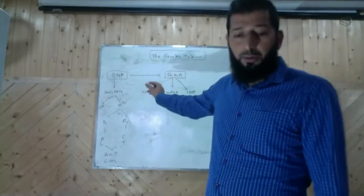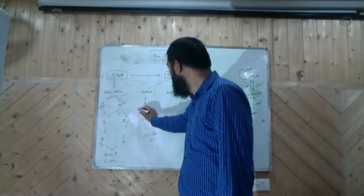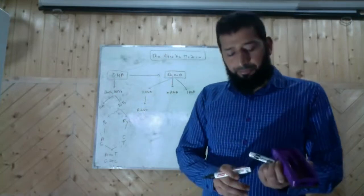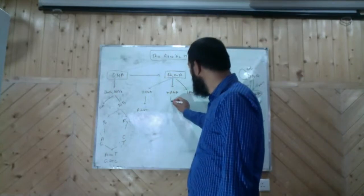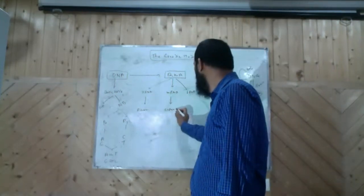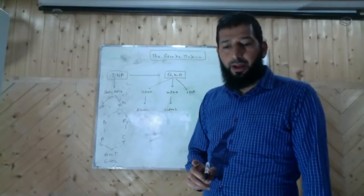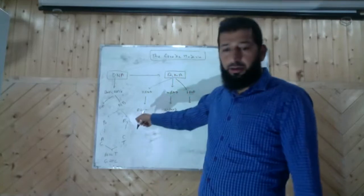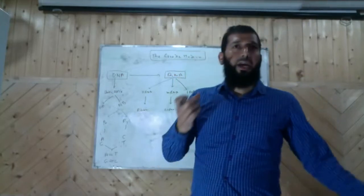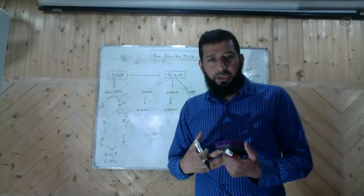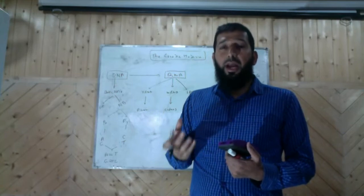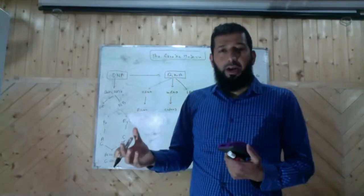Your ribosomal RNA is a component of ribosomes. Your messenger RNA is the main expressive part and is made up of codons. Your tRNA helps in protein synthesis, and there are 20 types of tRNAs because there are 20 types of amino acids. Each tRNA combines with one amino acid with the help of aminoacyl-tRNA synthetase. So there are 20 types of aminoacyl-tRNA synthetases, 20 types of tRNAs, and 20 types of amino acids.